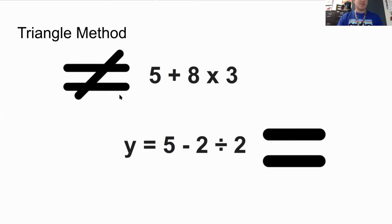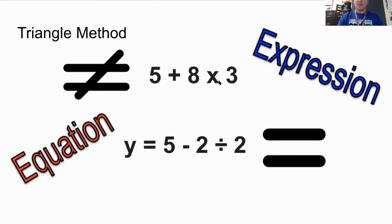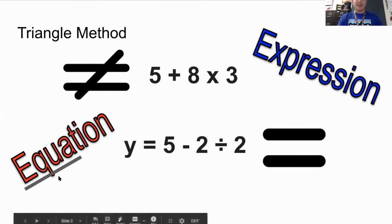So the reason why this is important to know is because these two things have different names. The top thing is called an expression. That means it does not have an equal sign. And the bottom number sentence is called an equation. And that means it does have an equal sign. And the way I remember it is that equals is almost in the word equation.